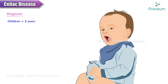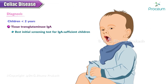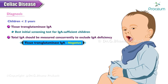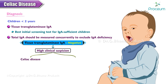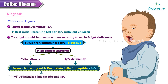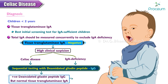For children younger than 2 years, IgA tissue transglutaminase is the best initial screening test for IgA-sufficient children. Total IgA should be measured concurrently to exclude IgA deficiency. If IgA tissue transglutaminase is negative but there is high clinical suspicion for celiac disease, or if the patient is IgA deficient, the latest recommendation suggests sequential testing with deaminated gliadin peptide IgG to detect patients with positive deaminated gliadin peptide IgG but normal IgA tissue transglutaminase.